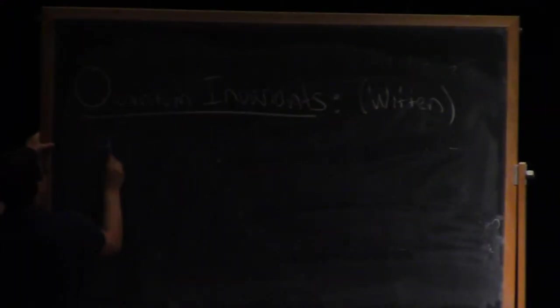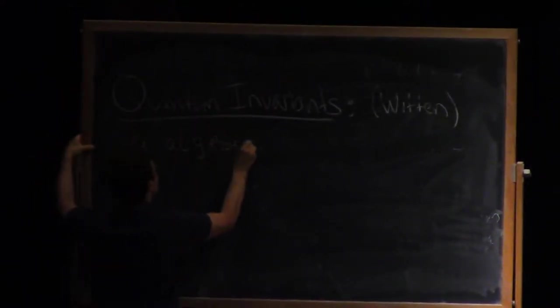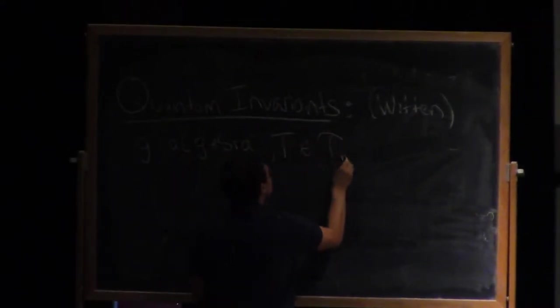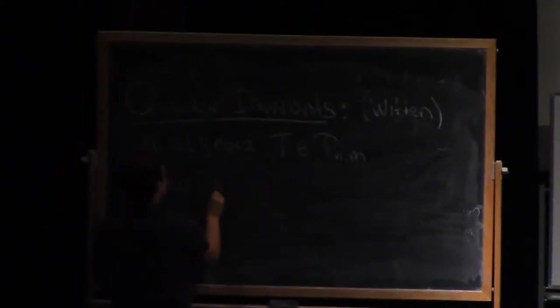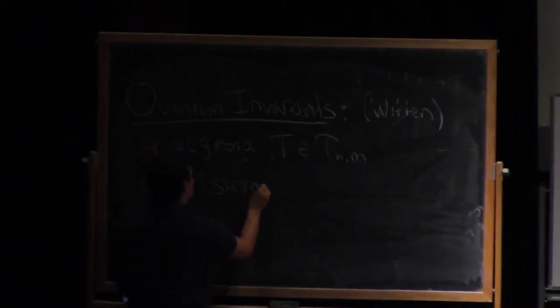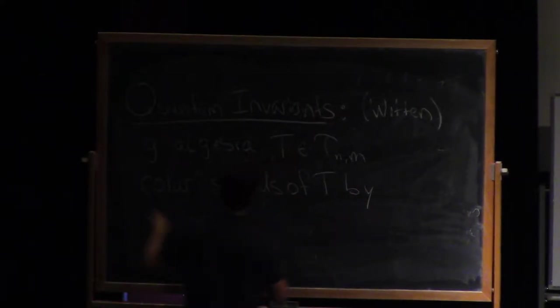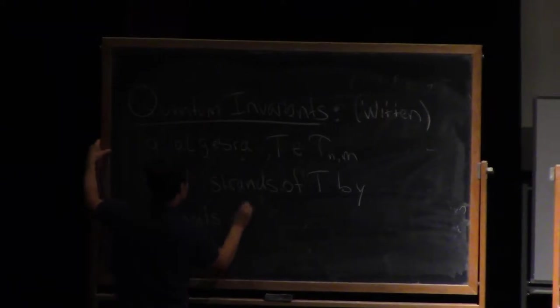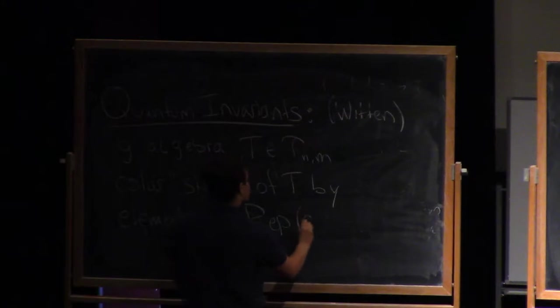Okay, and so probably I should mention Witten's name here. So the setting is that I have, let's say, G, a Lie algebra, and a tangle, say T in M, and I color the strands of T by elements of the space of representations of G.